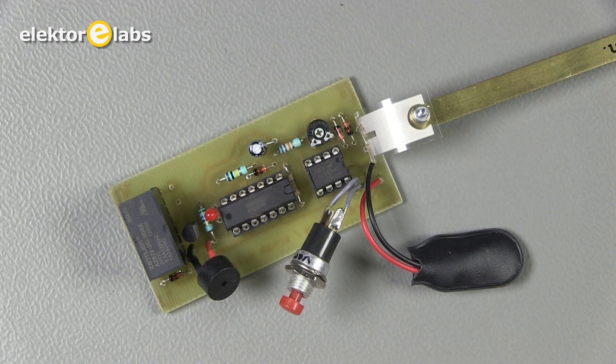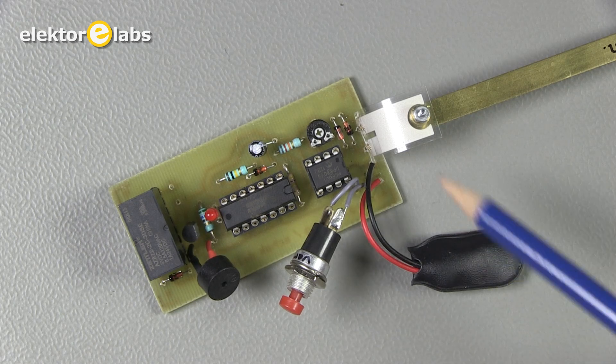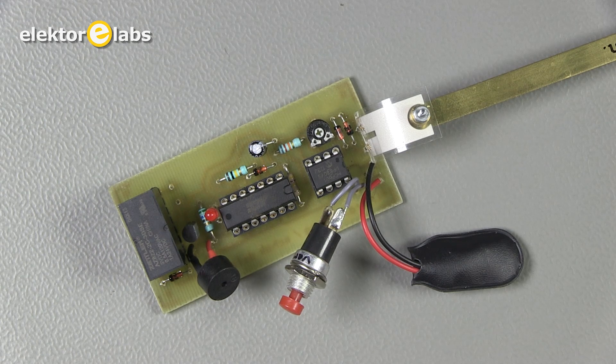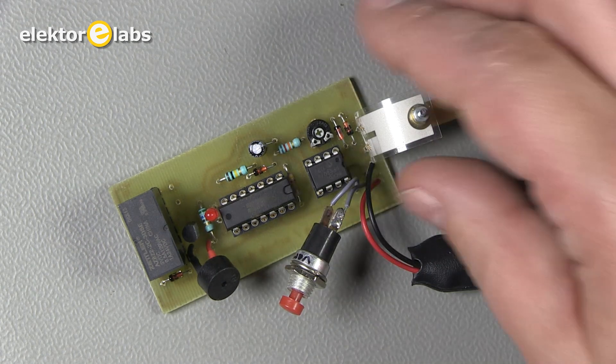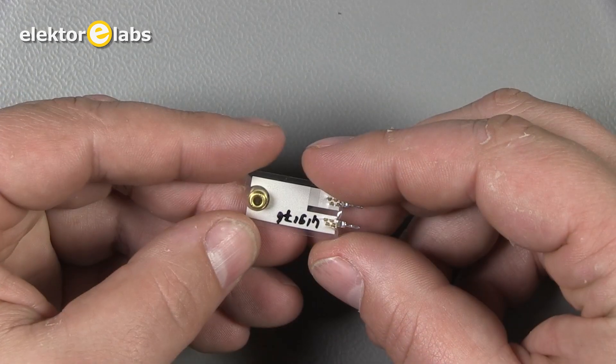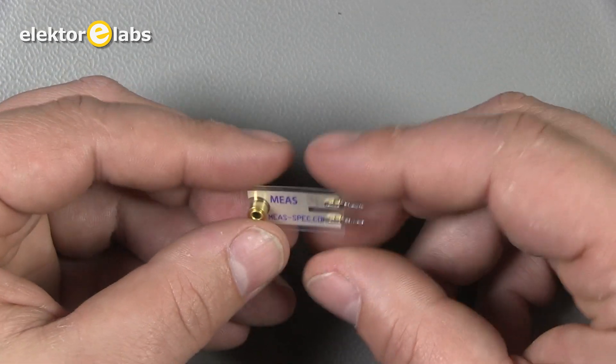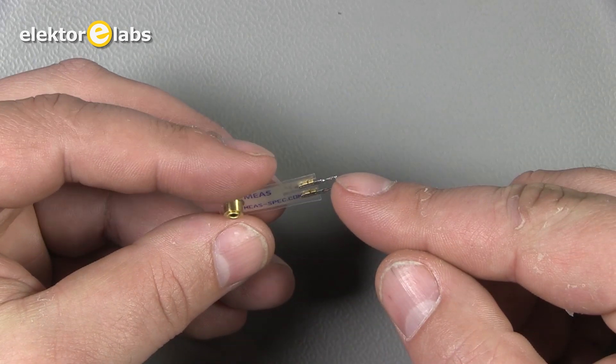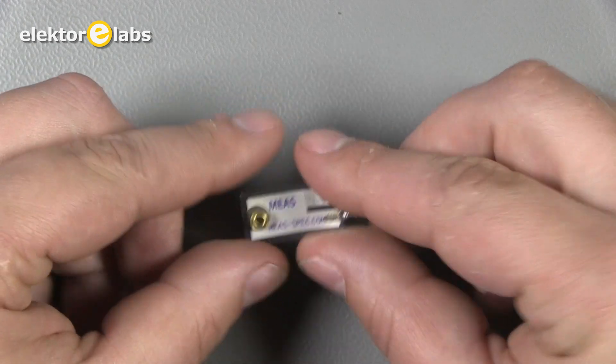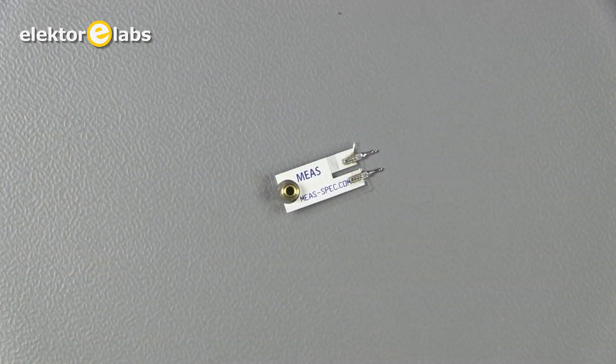The key component of this compact circuit is the vibration sensor. The LDTM028K sensor from Measurement Specialties used here consists of a thin piezoelectric plastic film which has two solder pins at one end for fitting it to a PCB and a threaded bush at the other end for attaching a pendulum or a weight.